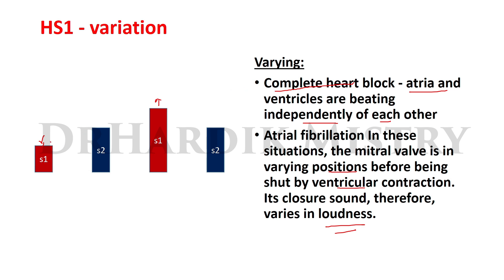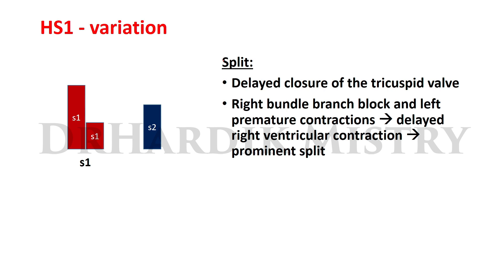In both complete heart block and atrial fibrillation, HS1 varies in intensity — sometimes softer, sometimes louder. Splitting of the first heart sound is due to delayed closure of the tricuspid valve. It is seen in right bundle branch block and left premature contractions, because in both conditions there is a delay in right ventricular contractions, causing prominent splitting of HS1.